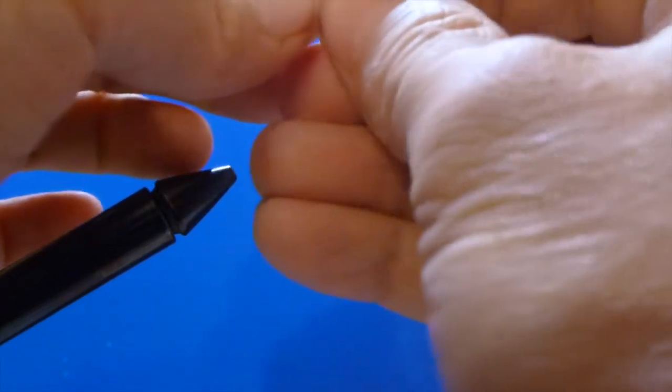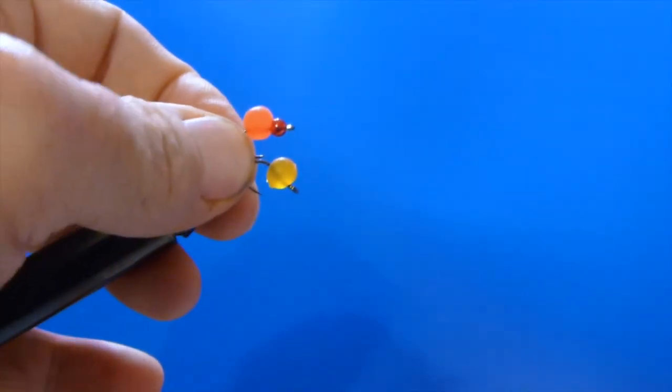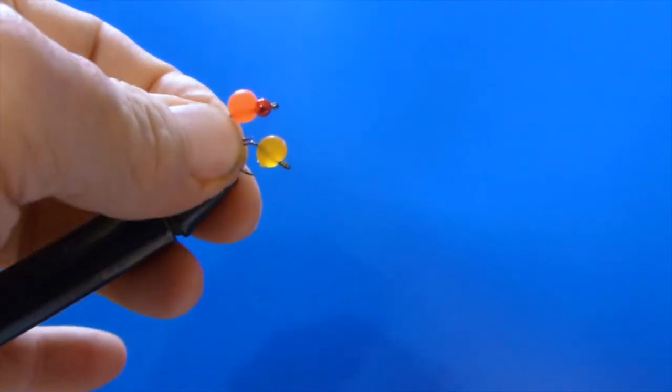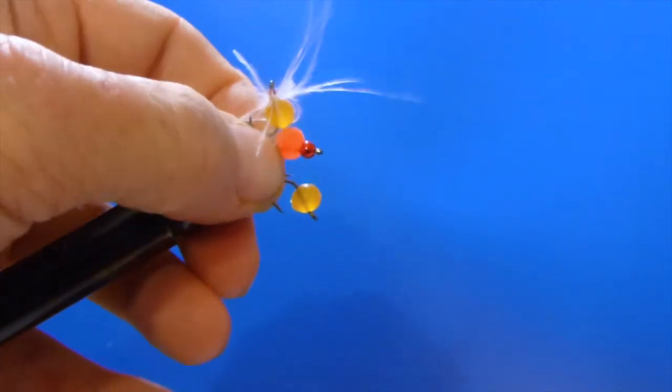So we've got three variations to our gummy flies. We've got the bead headed one to help weight it down, we've got our standard one, and we've got one with just a few strands of marabou.